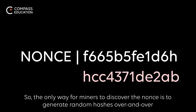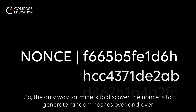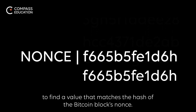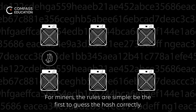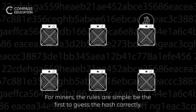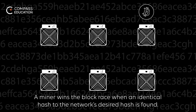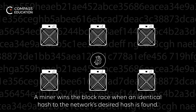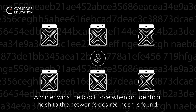So the only way for miners to discover the nonce is to generate random hashes over and over to find a value that matches the hash of the Bitcoin block's nonce. For miners, the rules are simple: be the first to guess the hash correctly. A miner wins a block race when an identical hash to the network's desired hash is found.